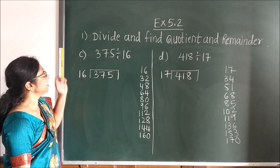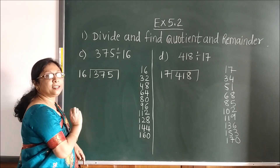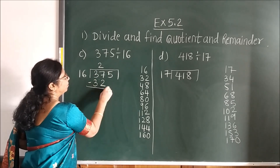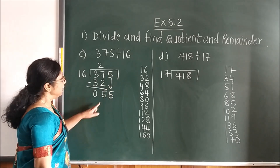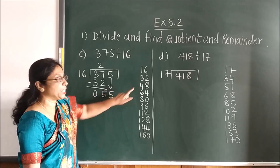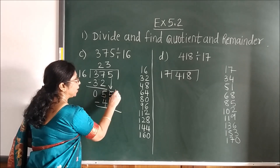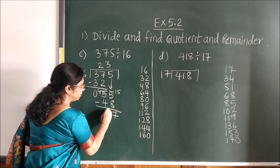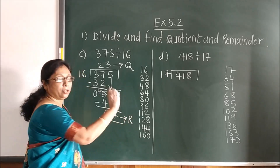Now here: see the table of 16. Less than 37 is 32, so 16 twos are 32. Subtract — you get 5. Bring the next number down. Less than 55: 48 is less than 55, so 16 threes are 48. When you subtract you get 7 and 0. This is your quotient and this is your remainder.